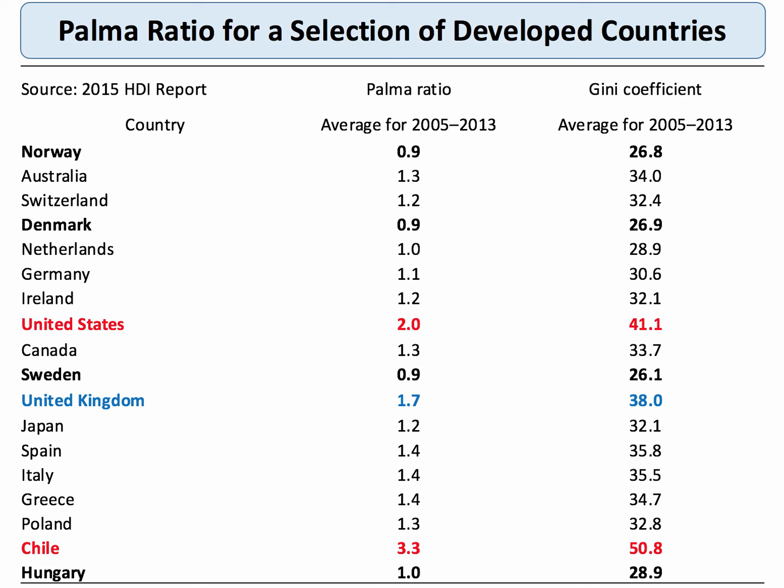Notice too that countries with a low Palma ratio tend to have a very low Gini coefficient, which I've put on the right hand side for emphasis. So Chile has a Palma ratio of 3.3, easily the highest of those countries, and of course it has a significantly higher Gini coefficient. The United States has a higher Palma ratio than the UK, and also a higher Gini coefficient. So that's for countries with low income inequality.